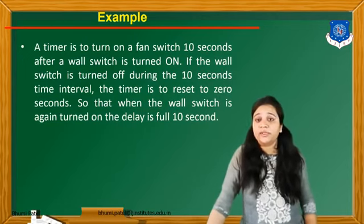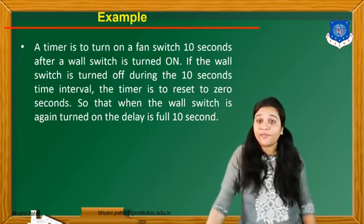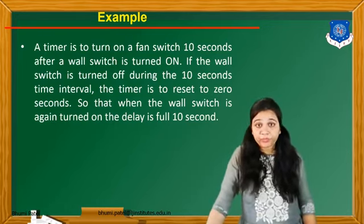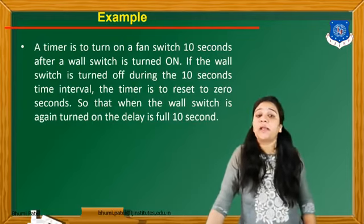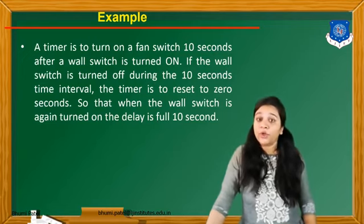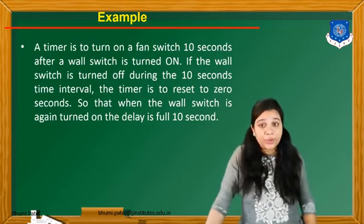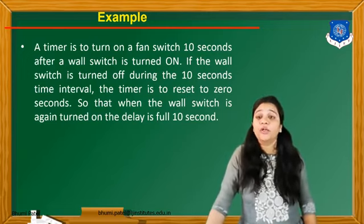The first example is: a timer is to turn on a fan switch 10 seconds after a wall switch is turned on. If the wall switch is turned off during the 10-second time interval, the timer is to be reset to 0 seconds so that when the wall switch is again turned on, the delay is the full 10 seconds.